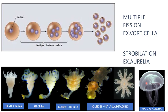Strobilation is seen in the mature aurelia. It is a special type of transverse fission where transverse fissions take place and each forms a new individual, but they do not separate immediately. Here we see a young ephyra larva detaching from the parent, which then gives rise to a mature aurelia. This special type of transverse fission is called strobilation.